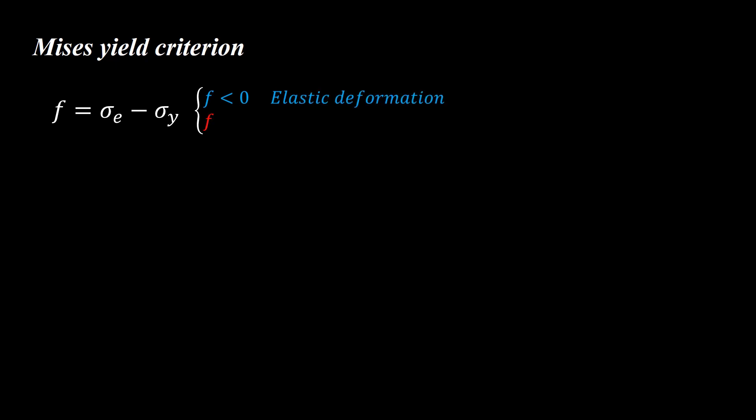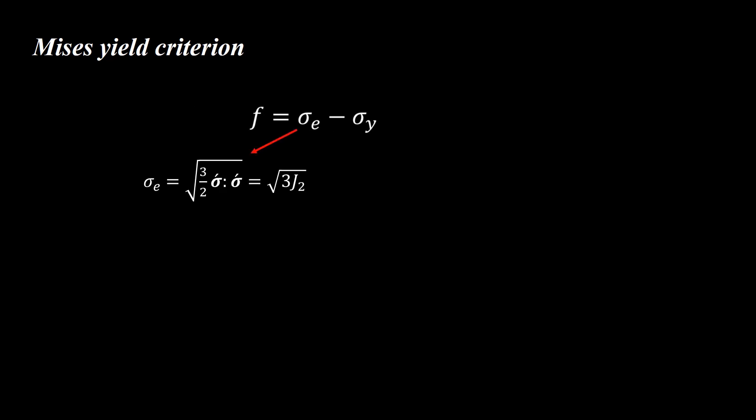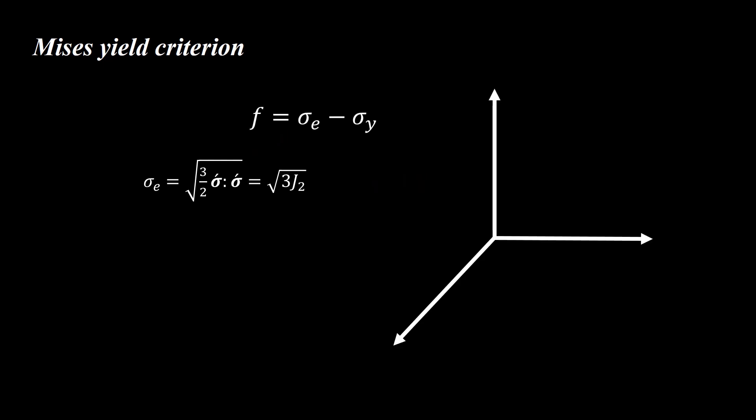The Mises criterion is the most famous yield function for plasticity of metals. The Mises yield function is defined as effective stress minus flow stress. If this function is negative, the material is in the elastic region. If it equals zero, the material is in the plastic region and a combination of elastic and plastic deformation occurs. Flow stress increases as a function of effective plastic strain in the hardening region of the stress-strain curve.